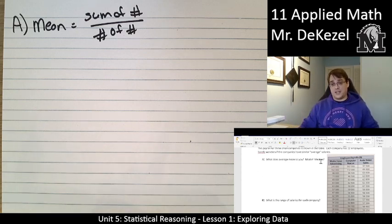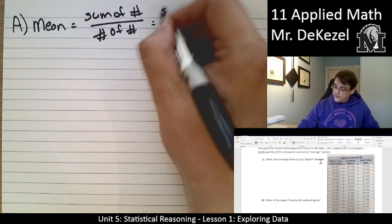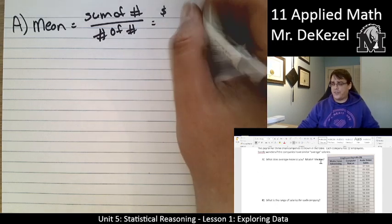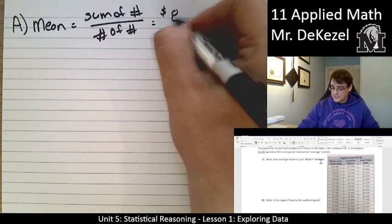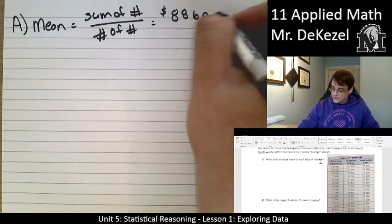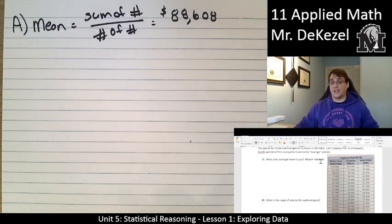In this case, we would look at Media-Focused Advertising, and we would add up all of the numbers. 245,000, 162,000, 86,000, 71, 65, 61, 61, 57,500. We'd add them all up and divide them by 12, because there's 12 numbers there, 12 employees. I did that and found out that the average value for that company, for the mean, is $88,608. Sounds pretty good. That's the average. You take all of them added up, divide it by the number of people that there are, and the average person makes $88,000.